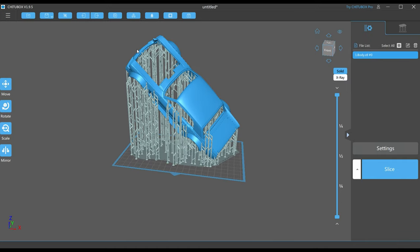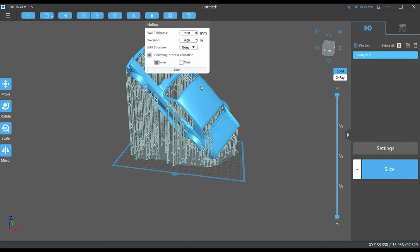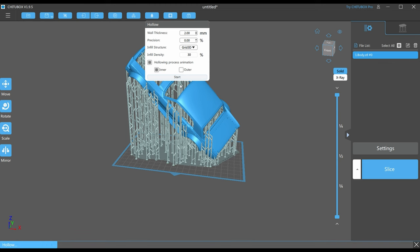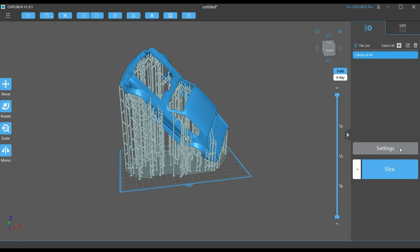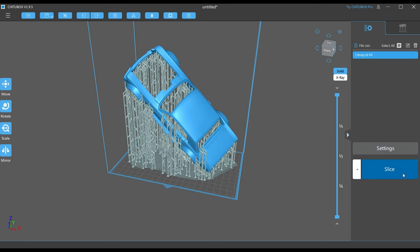Before slicing don't forget to check the Halloween setting and apply. It's not significant to this model because it's not filled, it has its own structure. But I always apply this setting not to forget about that. And after Halloween, you can navigate to the slicing settings. Slice it.